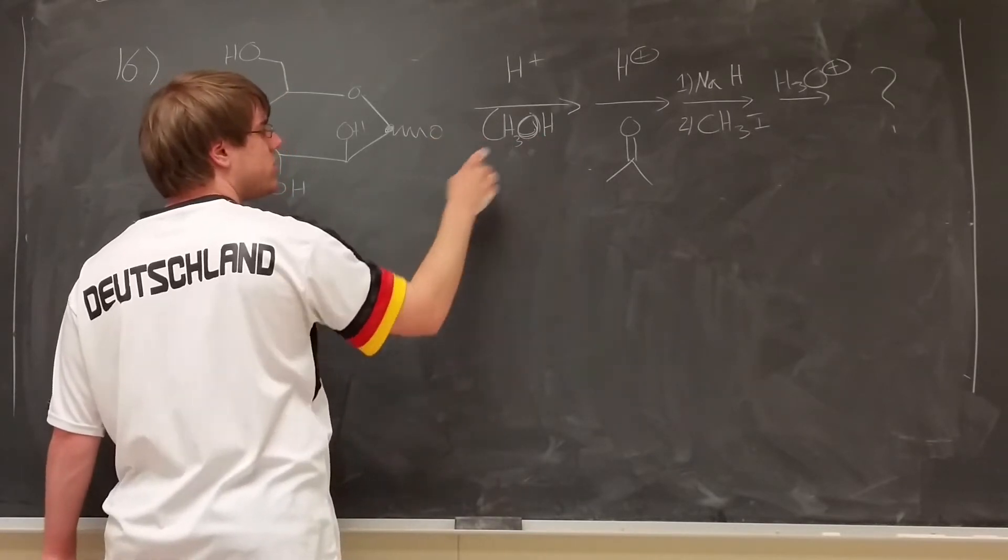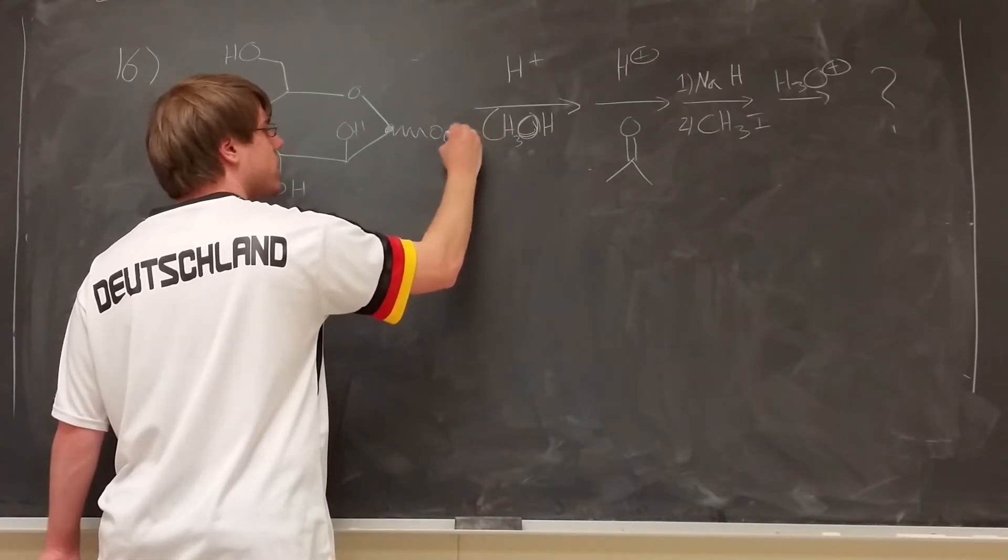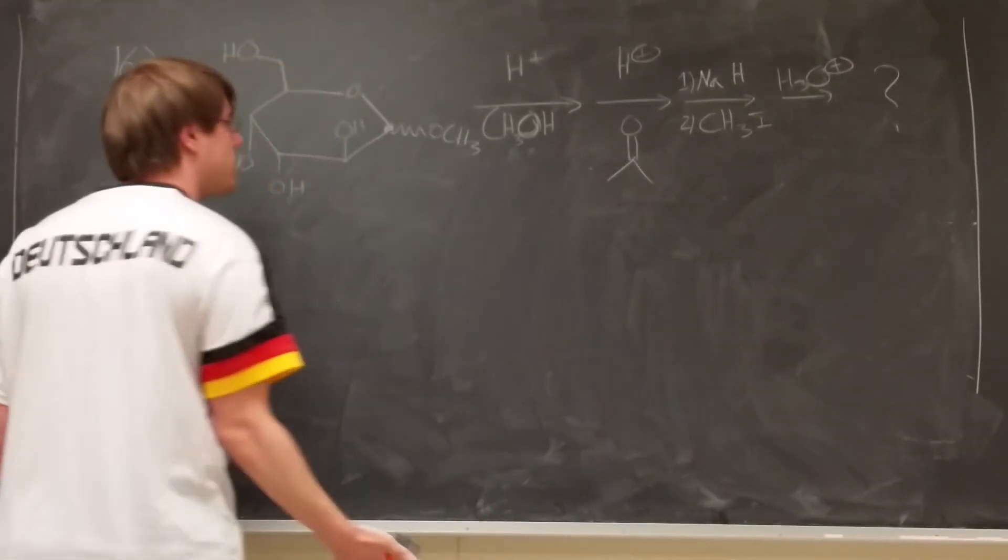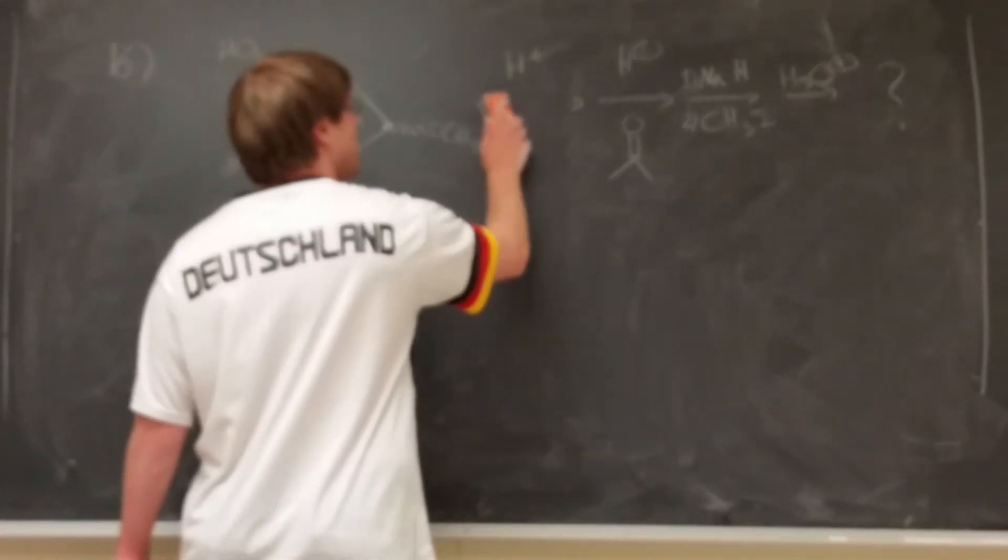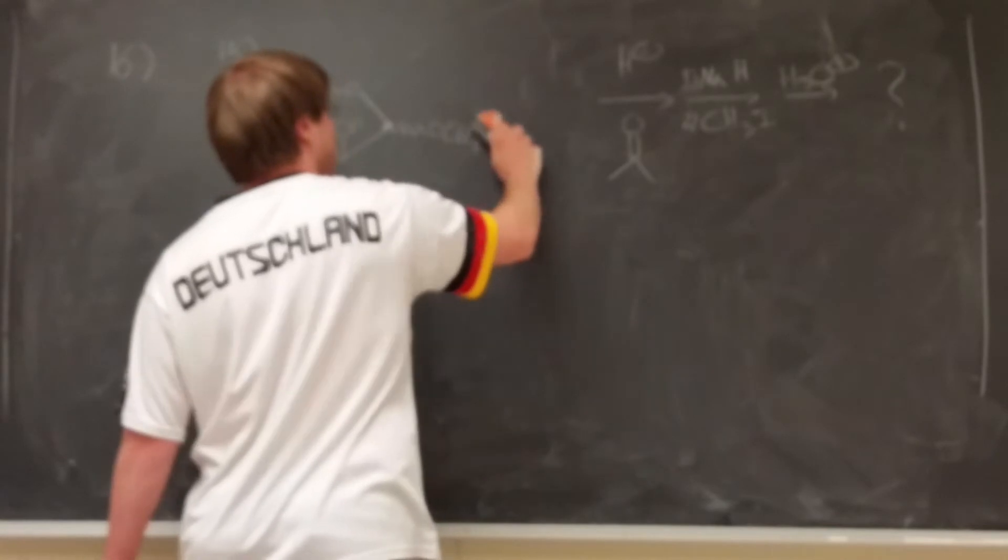So you erase the hydrogen, and since it's CH3, it'll become an OCH3. This is what you should expect to have after the first step with H+, CH3OH. That reaction only reacts with your anomeric OH.